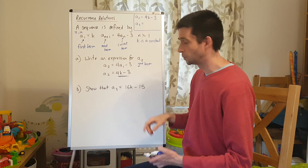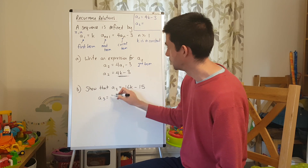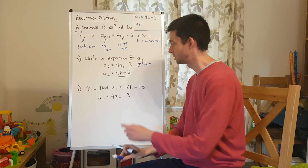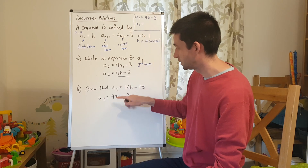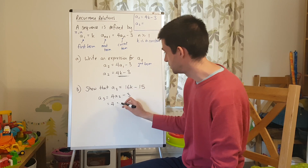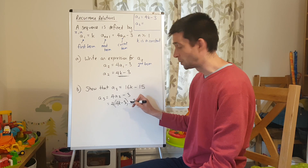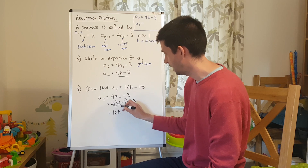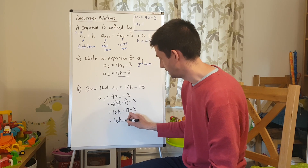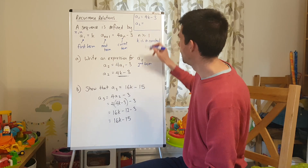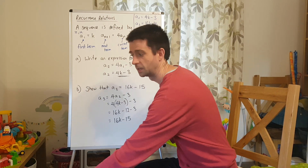Part b: show that a3 equals 16k minus 15. Again, using the formula, a3 is going to be equal to 4 lots of a2 minus 3. So a2 is the current term, a3 is the next term, and we're using the definition of the sequence we've been given. So 4 lots of a2 — I know that a2 is 4k minus 3, so I'll put that in there, take away 3. 4 lots of (4k minus 3): expand the bracket — 16k, and 4 times negative 3 is negative 12, subtract the 3, and we have 16k minus 15, as required. I'm going to jot up that a3 is 16k minus 15 because I'll need that in a minute.